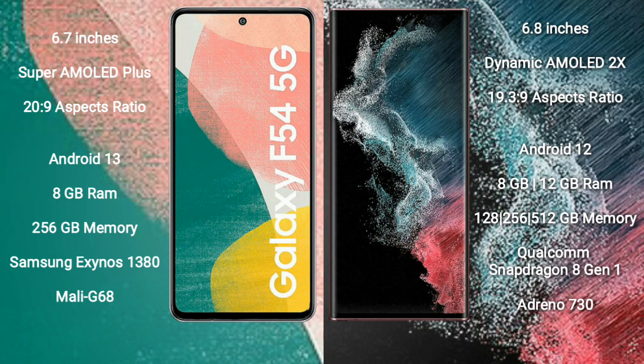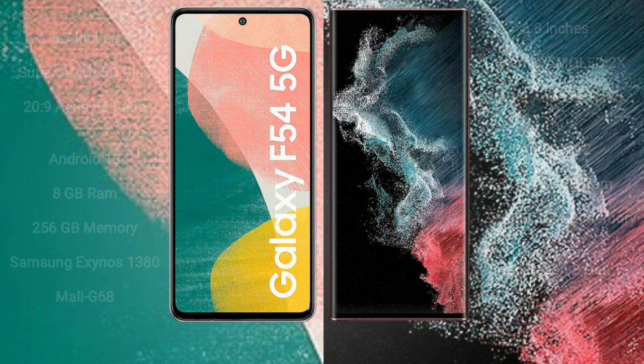Samsung Galaxy S22 Ultra comes with 8GB or 12GB RAM and 128GB or 256GB internal storage. It features the Qualcomm Snapdragon 8 Gen 1 processor with Adreno 730 GPU.